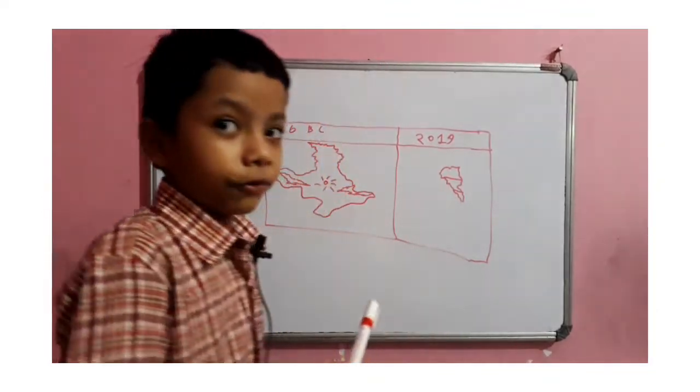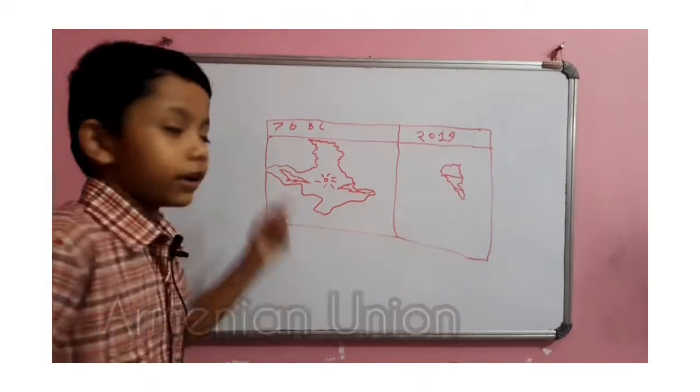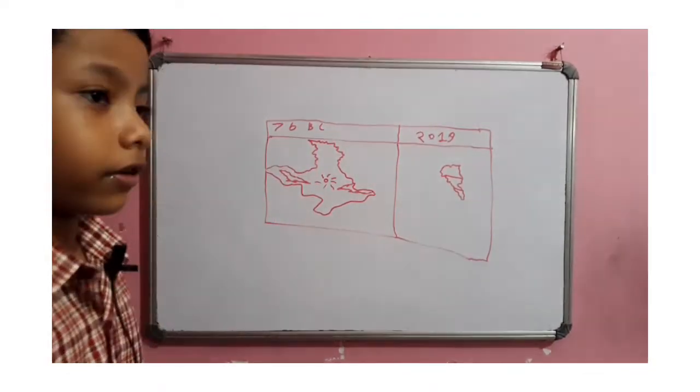This is Armenian Union. Armenian Union existed on 76 BC. That's the longest.